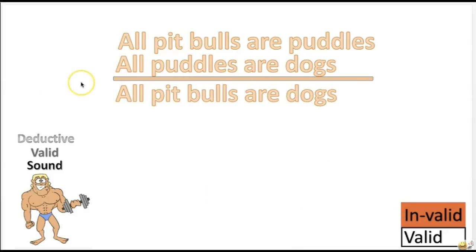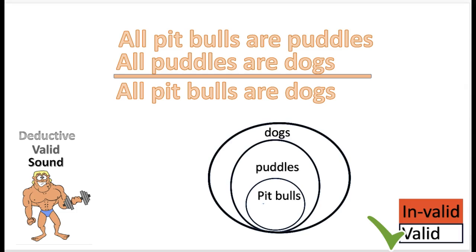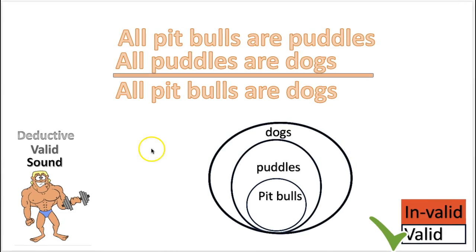Here's another practice problem: 'All pit bulls are poodles. All poodles are dogs. Therefore, all pit bulls are dogs.' Is this argument valid or invalid? The answer is valid. Of course, the first premise is false, but you still get a valid argument. If you assume that pit bulls are poodles, and that all poodles are dogs, then all pit bulls are also in the dog circle.